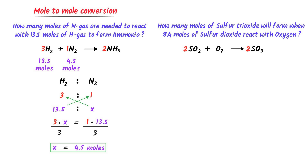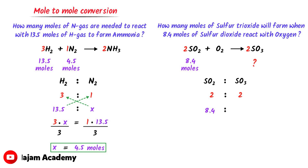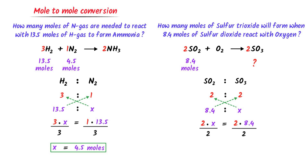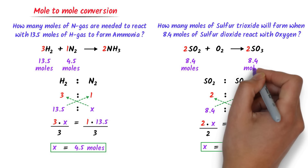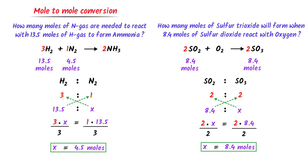According to the given statement, 8.4 moles of sulfur dioxide will react with oxygen to form x moles of sulfur trioxide. I establish the ratio between sulfur dioxide and sulfur trioxide, which is 2:2. Cross-multiplying: 2x = 2 × 8.4. Dividing both sides by 2, I get 8.4 moles. Thus 8.4 moles of sulfur dioxide react with excess oxygen to form 8.4 moles of sulfur trioxide.